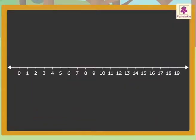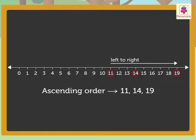Now, let us arrange these numbers in ascending order using a number line. So, on marking the numbers 14, 19 and 11 on the number line and reading it from left to right, we get the ascending order as 11, 14, 19.